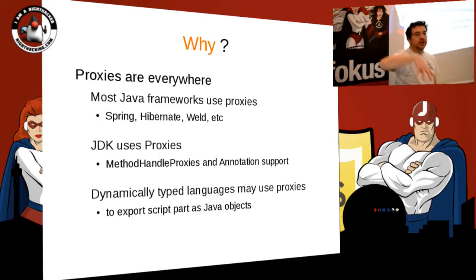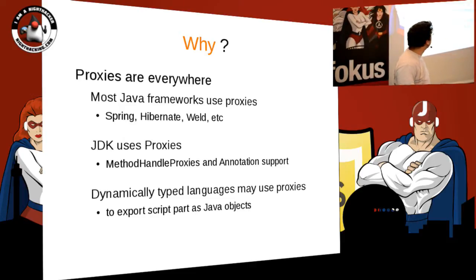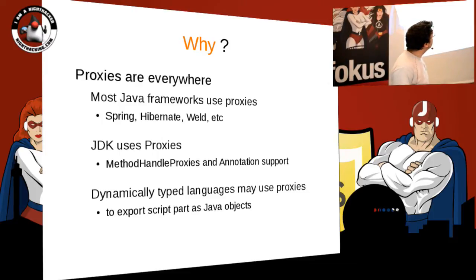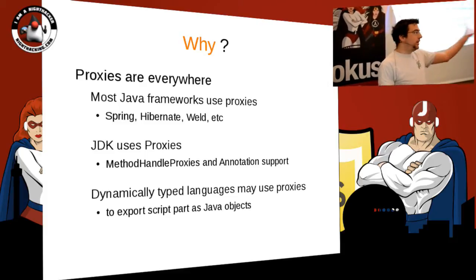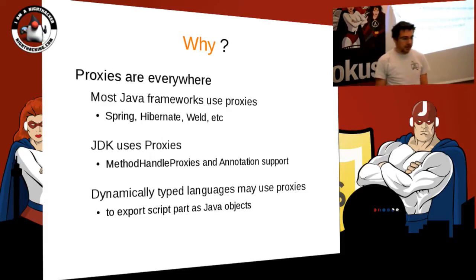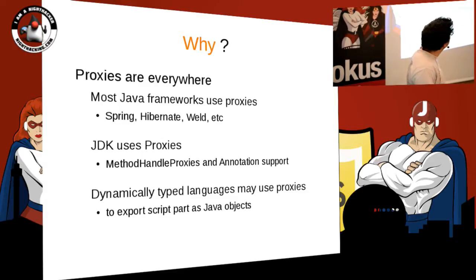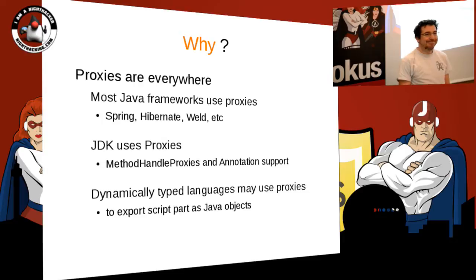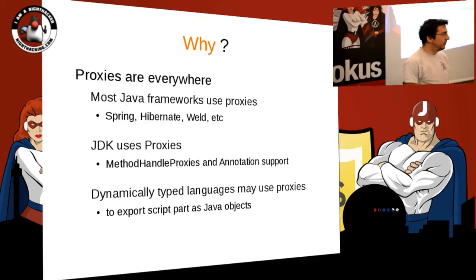Basically, you have your language and you want to access it from Java — for that you need a proxy. One thing Proxy 2.0 tries to do is bridge the invokedynamic world, where you can generate code, with the Java world where you can't generate code or use invokedynamic. You wouldn't need a better proxy if we had a way to generate invokedynamic in Java — we just wouldn't need proxies at all.